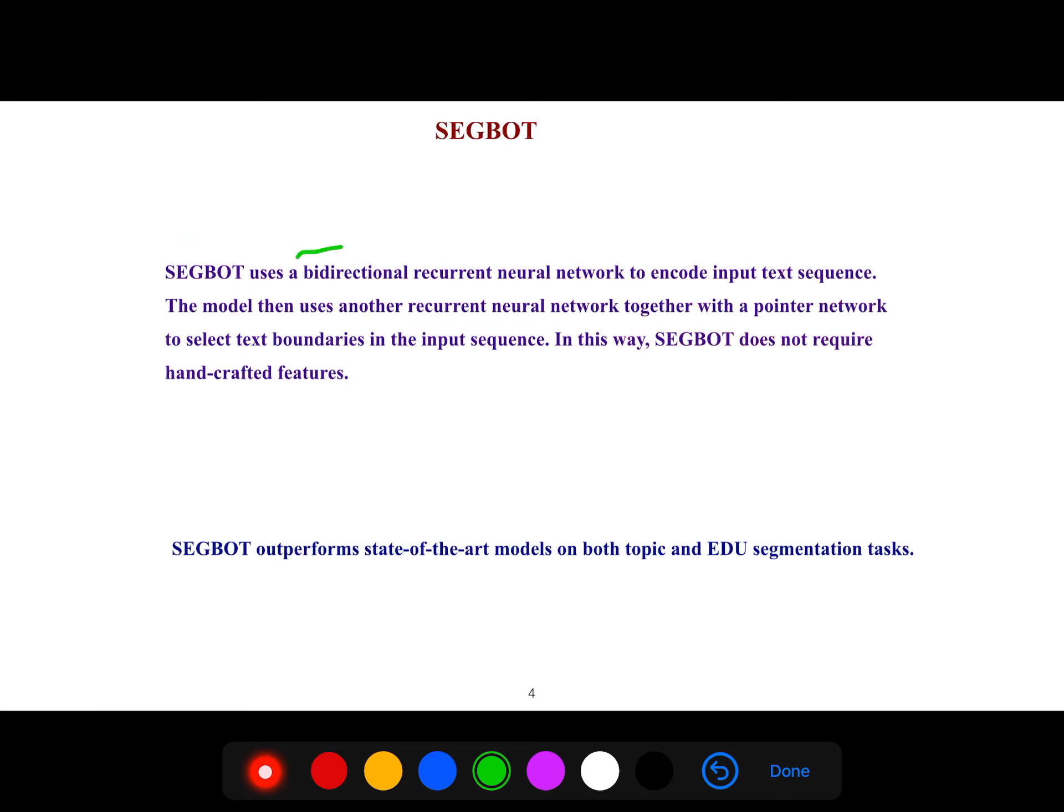SegBot uses bidirectional recurrent neural networks, just like the previous lecture. The model uses another recurrent neural network together with pointer to select text boundaries in the sequence. The good thing is that SegBot, unlike lecture one and two, does not require handcrafted features.